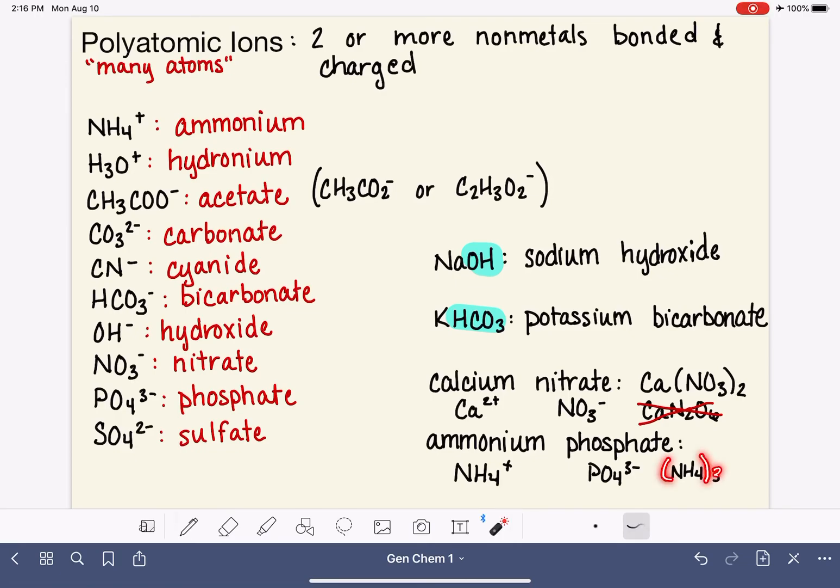We'll put the three on the outside that indicates the amount. This is telling us that we have three ammoniums because the charge on the phosphate is three. And for phosphate, the charge on ammonium is a one, so that means we only want one phosphate.